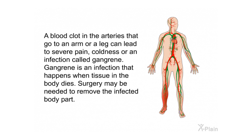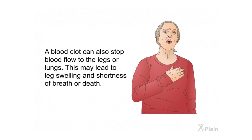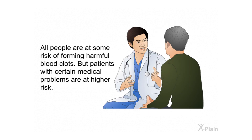A blood clot in the arteries that go to an arm or leg can lead to severe pain, coldness, or an infection called gangrene — an infection that happens when tissue in the body dies, possibly requiring surgery to remove the infected body part. A blood clot can also stop blood flow to the legs or lungs, leading to leg swelling, shortness of breath, or death. All people are at some risk of forming harmful blood clots, but patients with certain medical problems are at higher risk.